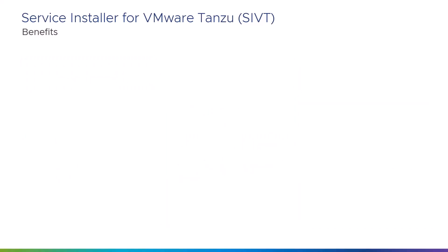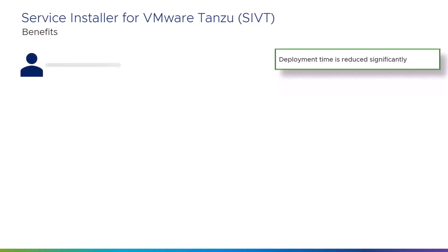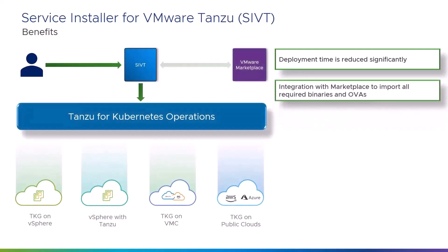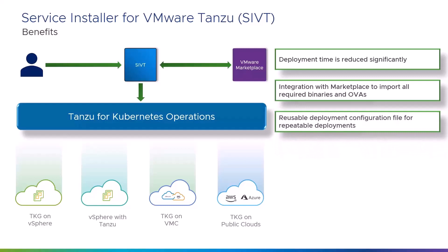SIVT significantly reduces the time for deploying TKO compared to manual deployments. It integrates with VMware Marketplace to import all the binaries and images required for deployment. With the SIVT WebUI, you can generate a deployment configuration JSON file that you can reuse for subsequent deployments with the required changes. You can also select an existing JSON file and make changes to the deployment configuration as needed.